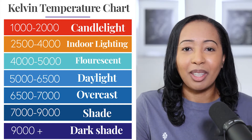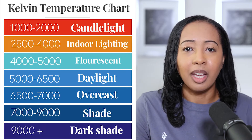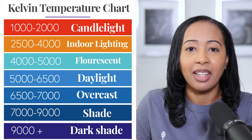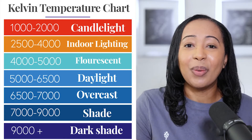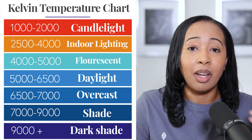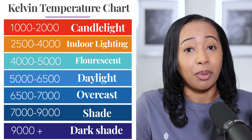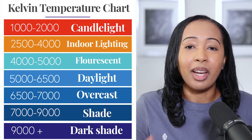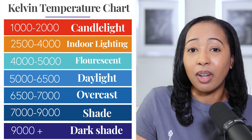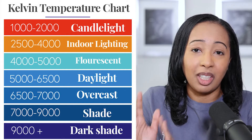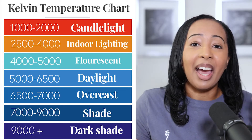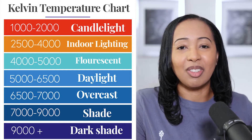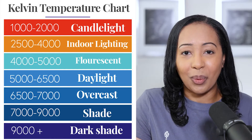I would usually set my Kelvin temperature to a lower setting thinking the sun is kind of orange or yellow, so I should set my Kelvin to match that — but that's not right. Actually in midday or mid afternoon, the sun presents as blue as far as your camera interprets it. This is why a Kelvin setting of about 5,500 to 6,000 is better for midday. And then as the day goes on and sunset happens, it becomes more orange, and so you can adjust your Kelvin accordingly.